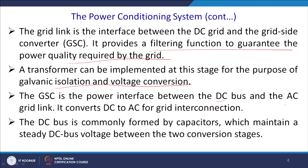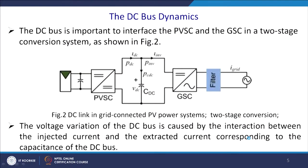The GSC is the power interface between the DC bus and the AC grid link. It converts DC to AC for the grid interconnection — that is its whole purpose. The DC bus is commonly formed by capacitors which maintain a steady DC bus voltage between the two conversion stages. Figure 2 shows the DC-link grid-connected PV power system for the two-stage conversion, with the DC bus interfacing the PV side converter and the grid side converter.